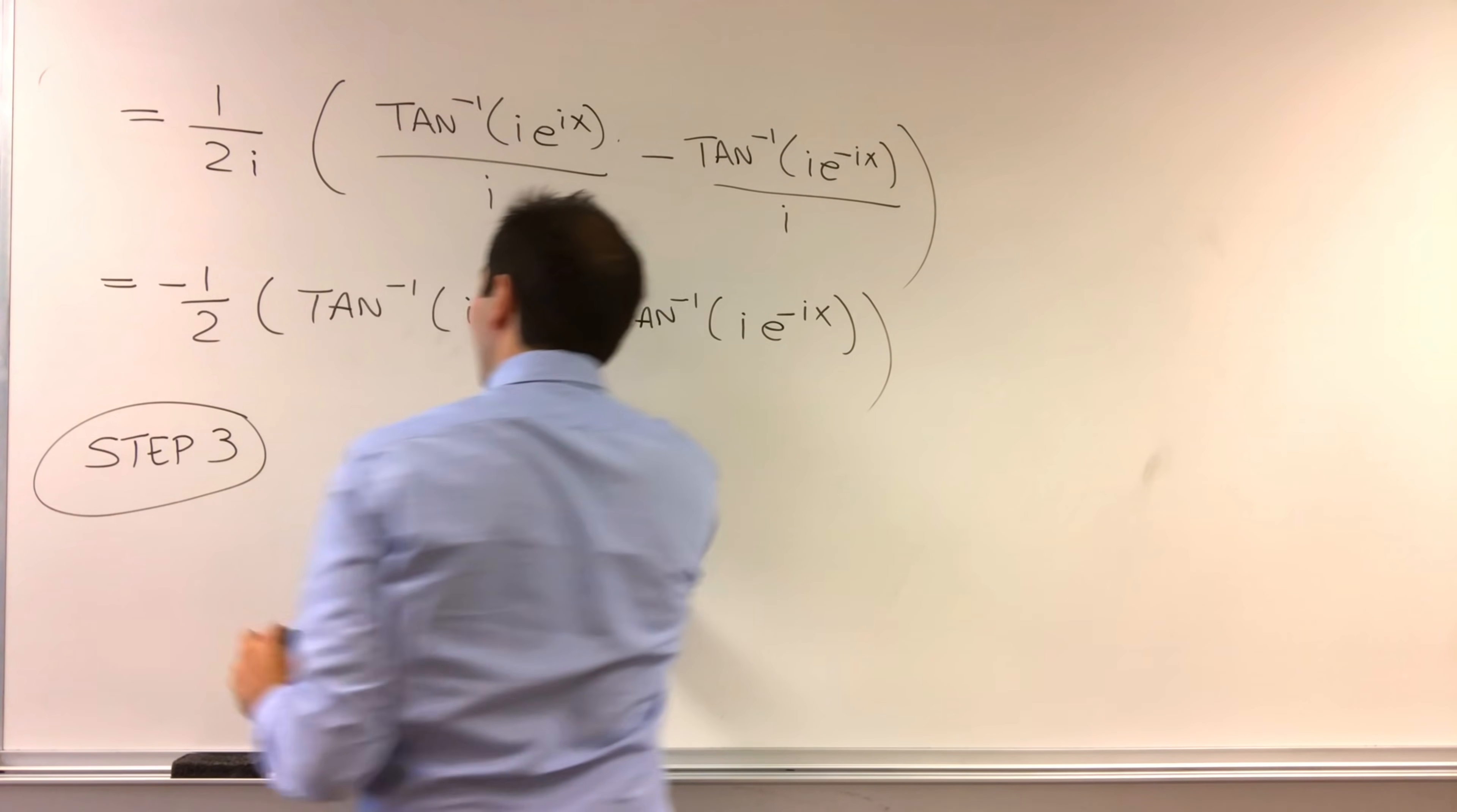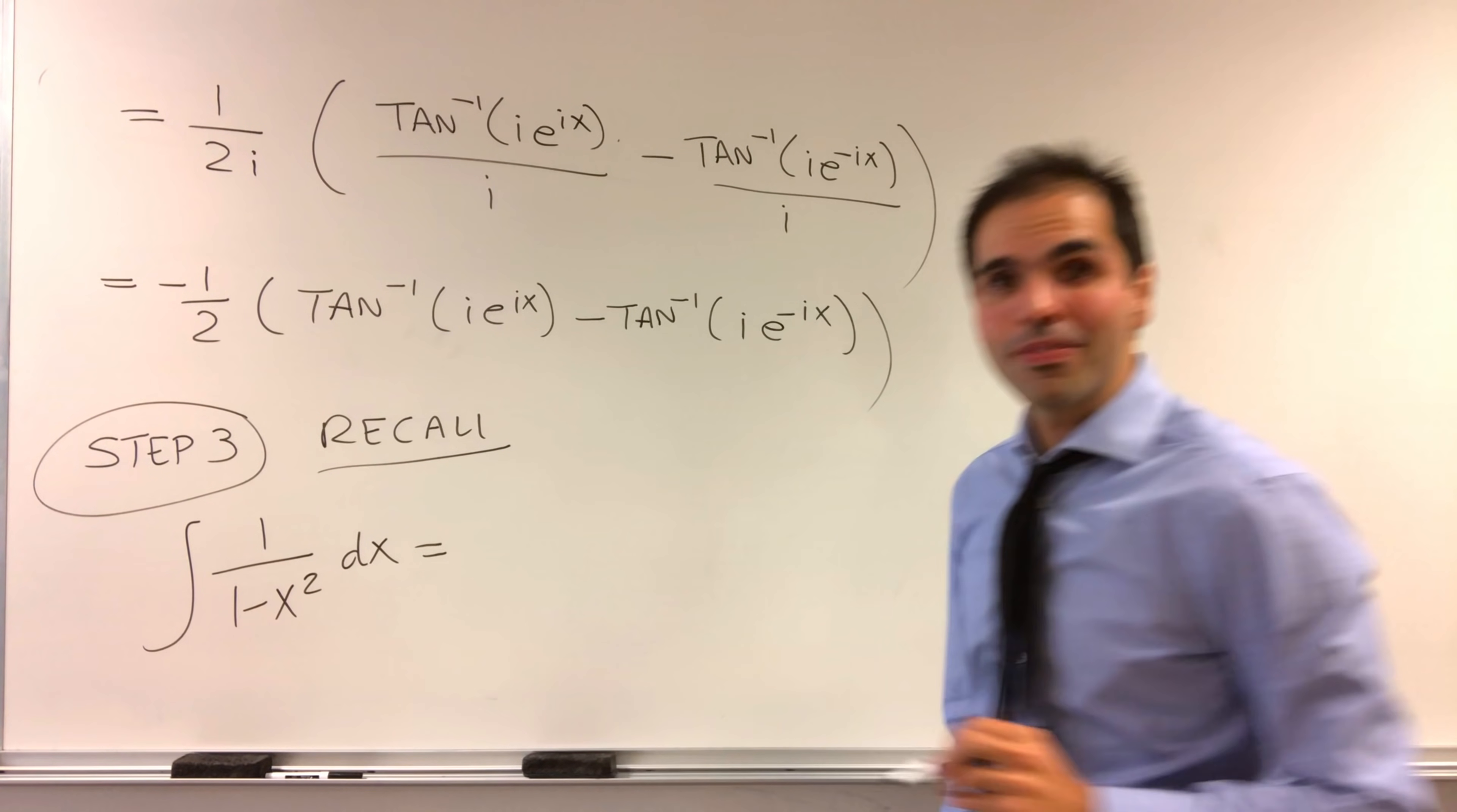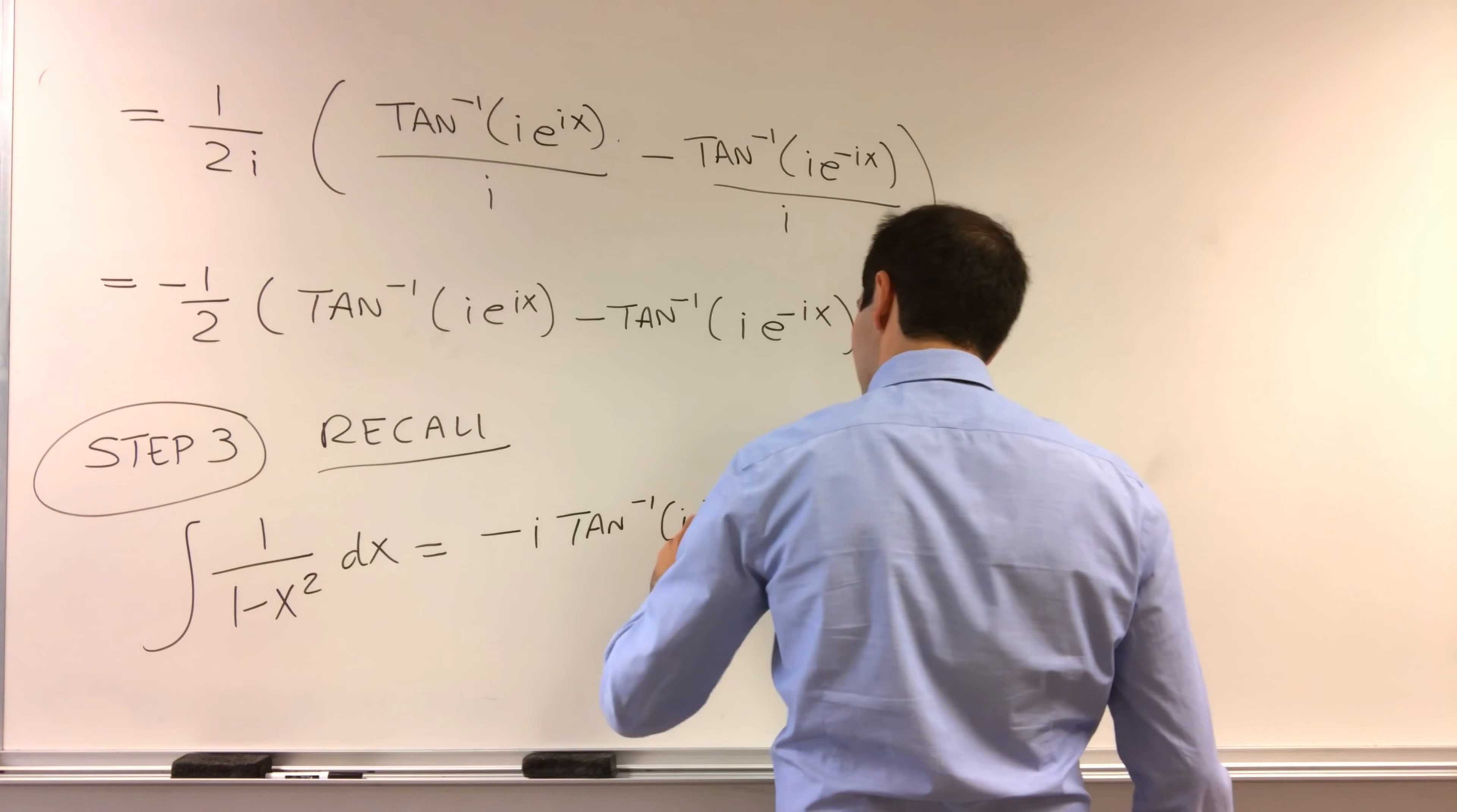turns out we can write all this in terms of ln. And you'll see in a second, there'll be a very beautiful simplification. Because recall, in one of my previous videos, I've calculated the integral of 1 over 1 minus x squared. On the one hand, I've done this using complex substitutions, complex trig substitutions, and I found that you get minus i arctangent of ix plus a constant.